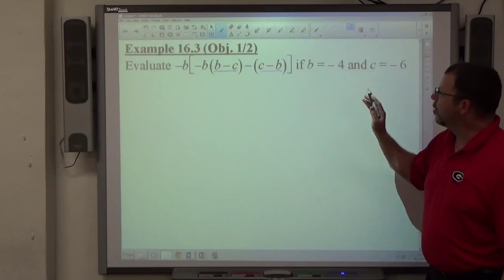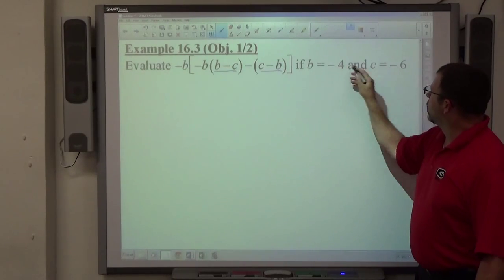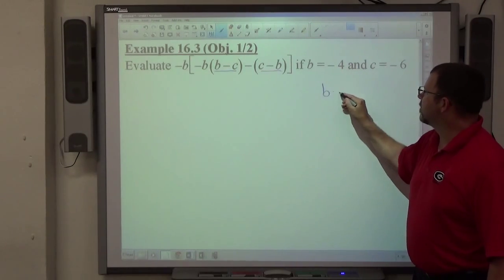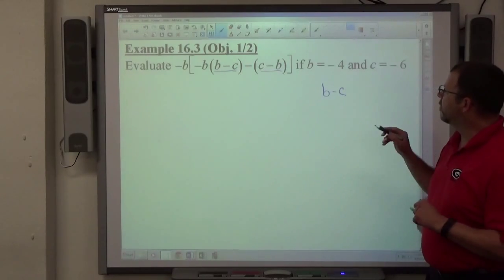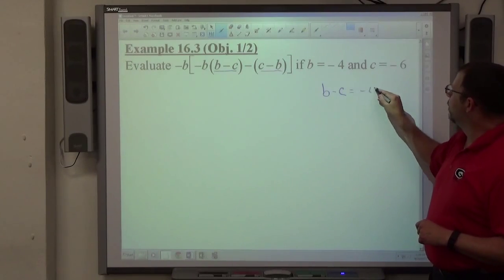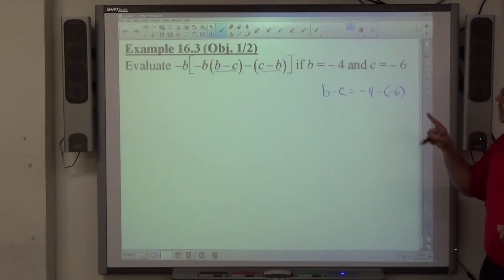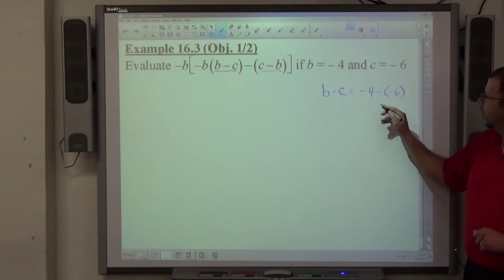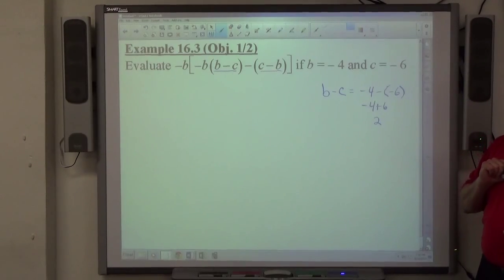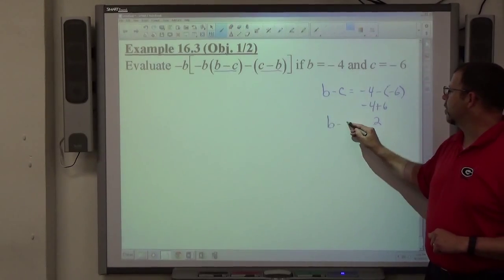So what I could do is, I know what b and c equal, right? So I look at b minus c before I work out all that stuff. B minus c would be negative 4 minus negative 6, which is going to be negative 4 plus 6, which equals positive 2. So b minus c is equal to positive 2.